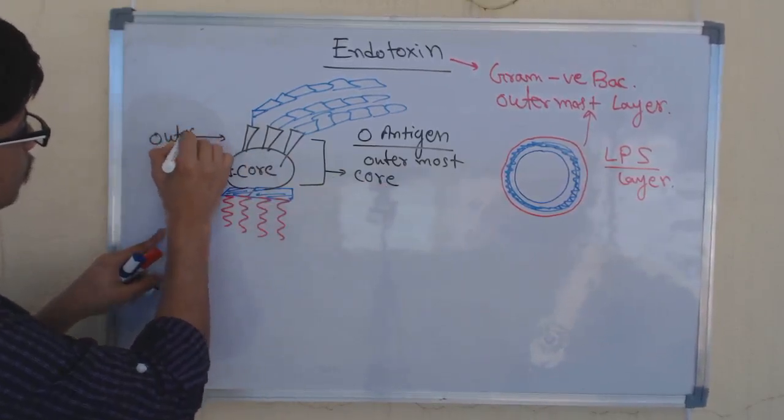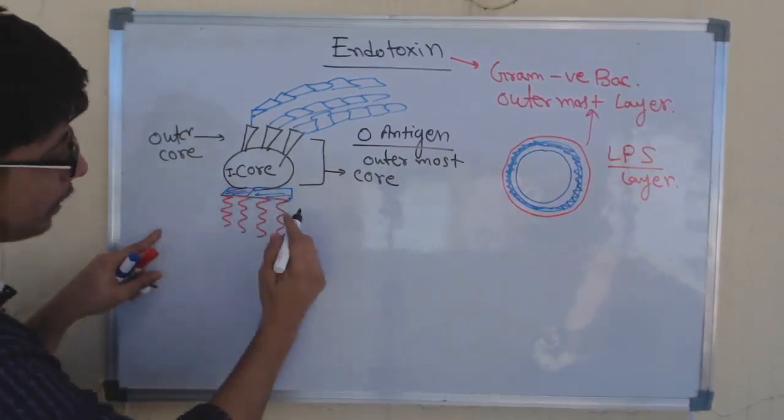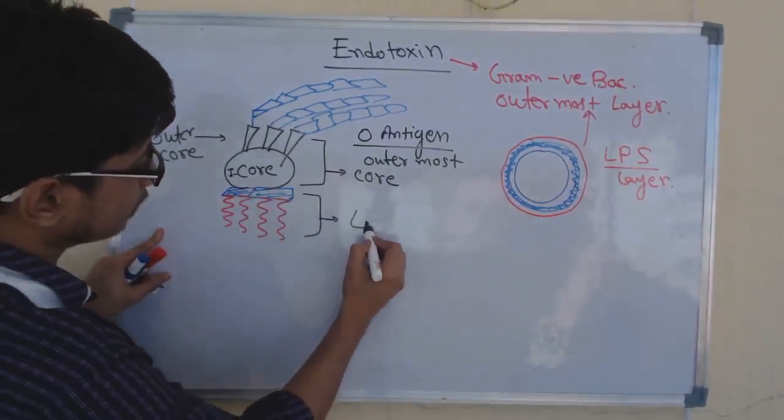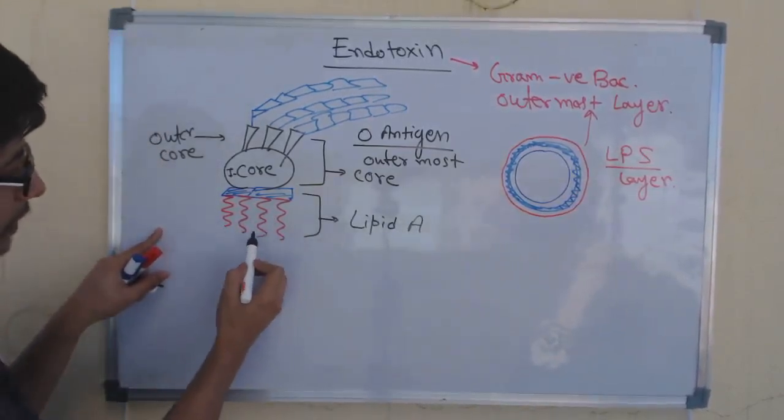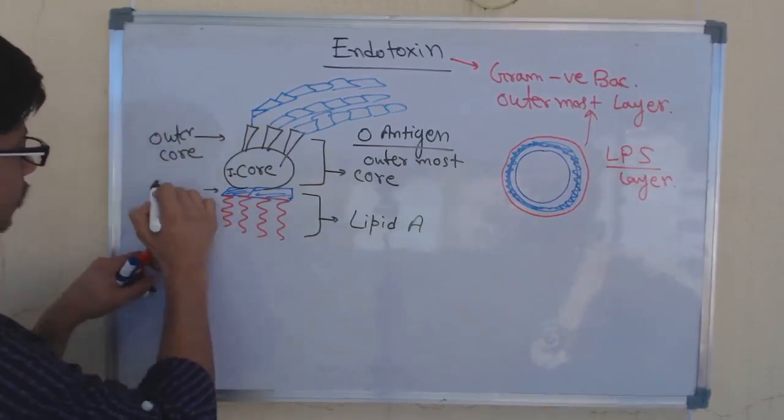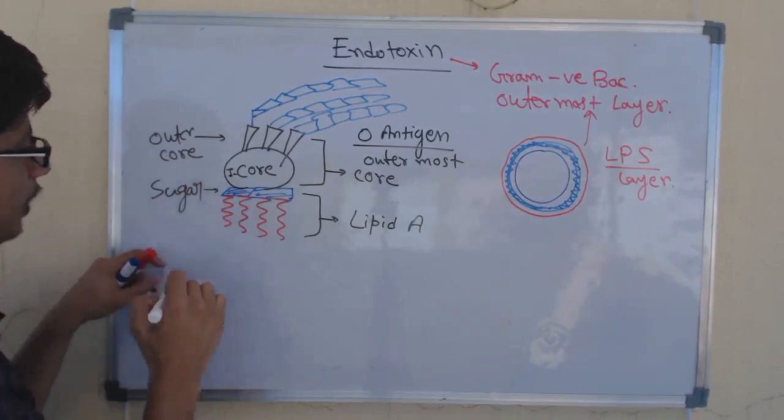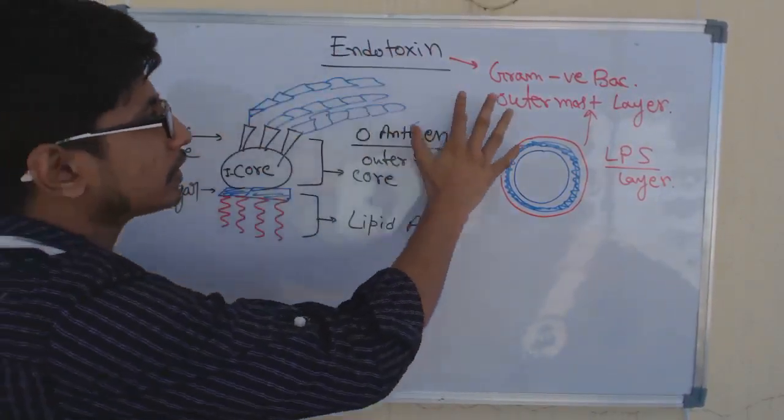And here this part is known as lipid A, because this is the lipid section but this is sugar. I draw lipids in this kinked structure. So this is an overview of the structure of endotoxin. This lipid A is required for the anchorage properly.